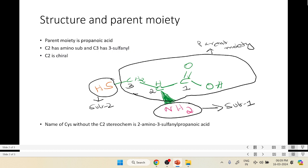If we just name the amino acid without the C2 stereochemistry, because we know that C2 is a chiral carbon, like all the chiral naturally occurring amino acids, the name of cysteine without the C2 stereochemistry is 2-amino-3-sulfanyl propanoic acid.